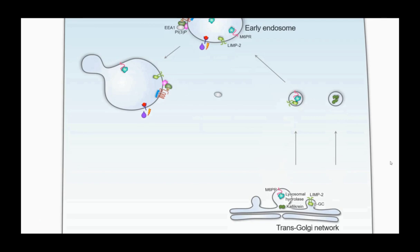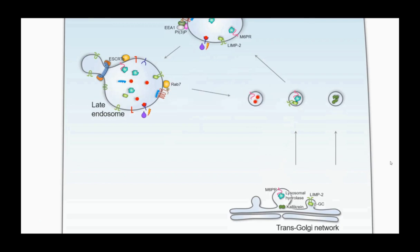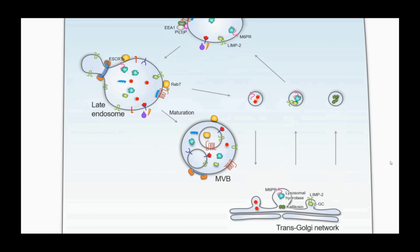The early endosome matures into a late endosome through a RAB5-to-RAB7 switch — we can define late endosomes by RAB7. It's slightly more acidic, causing further dissociation of cargo from receptors. LIMP2 is a critical regulator of biogenesis of endosomes; when overexpressed, it can result in swollen compartments and impaired trafficking. Escort proteins cause invagination or outward budding of vesicles from the late endosome, trafficking material back to the Golgi. The invagination of the membrane creates intraluminal vesicles and a compartment known as the multivesicular body (MVB). If the MVB fuses with the plasma membrane, those intraluminal vesicles are released as exosomes.